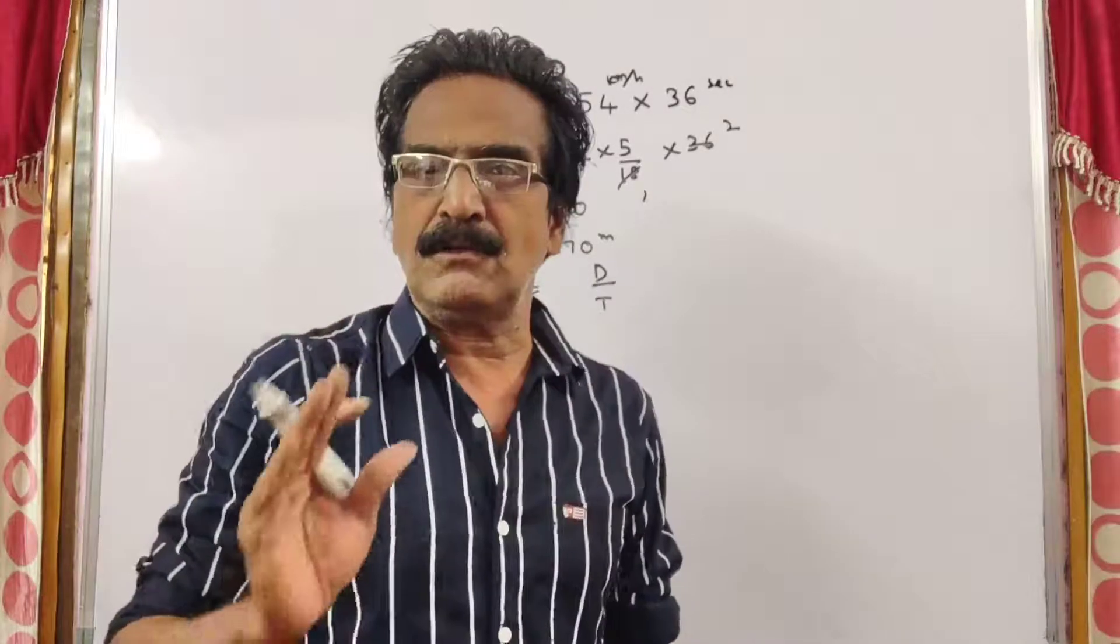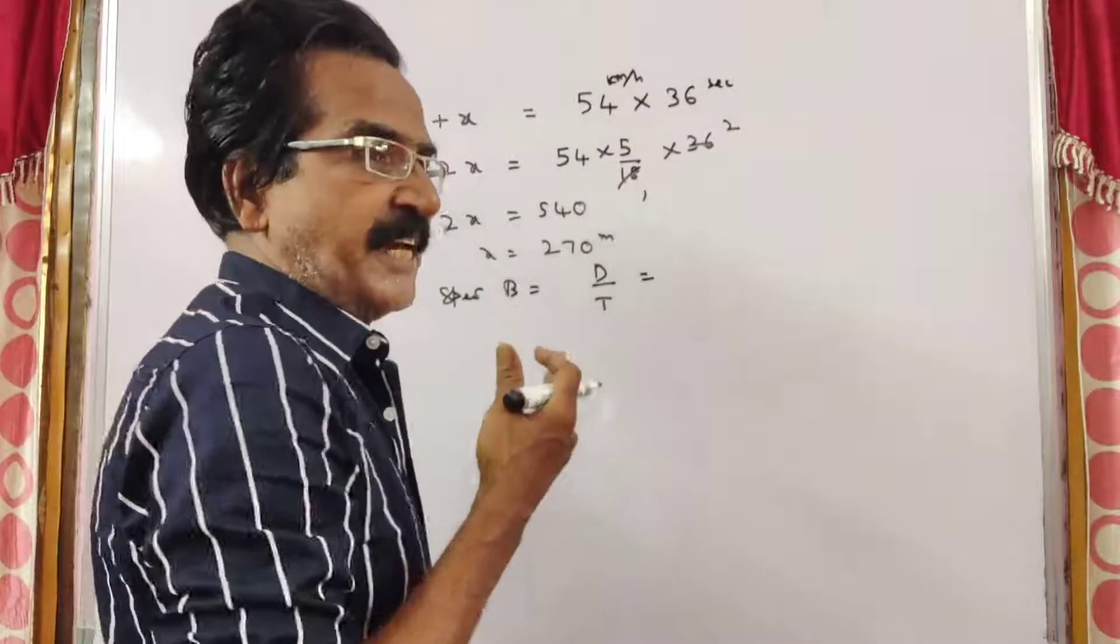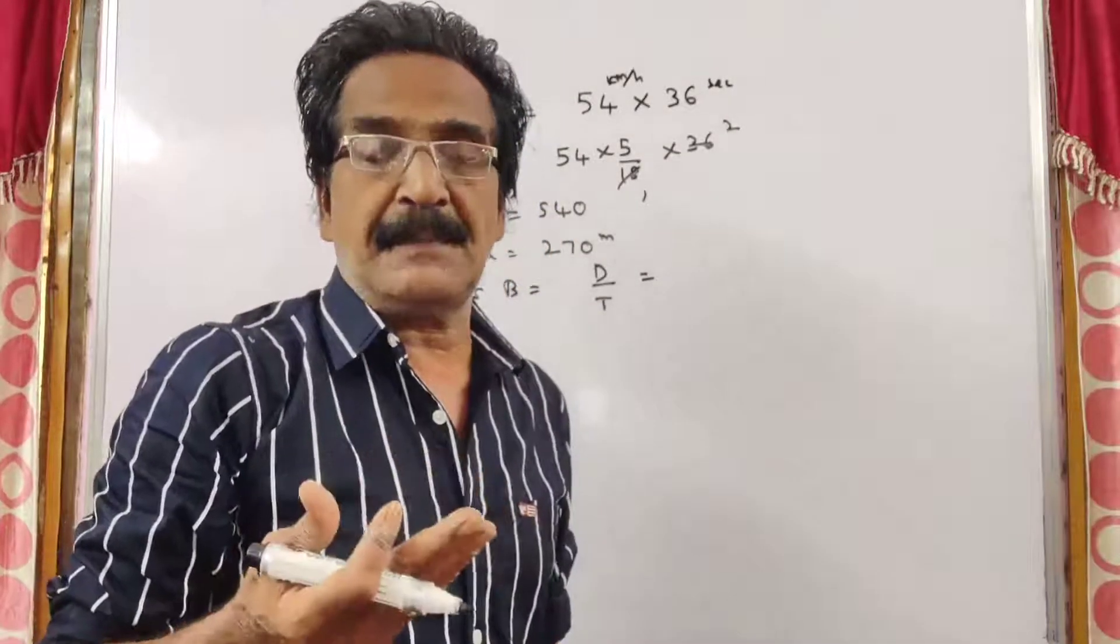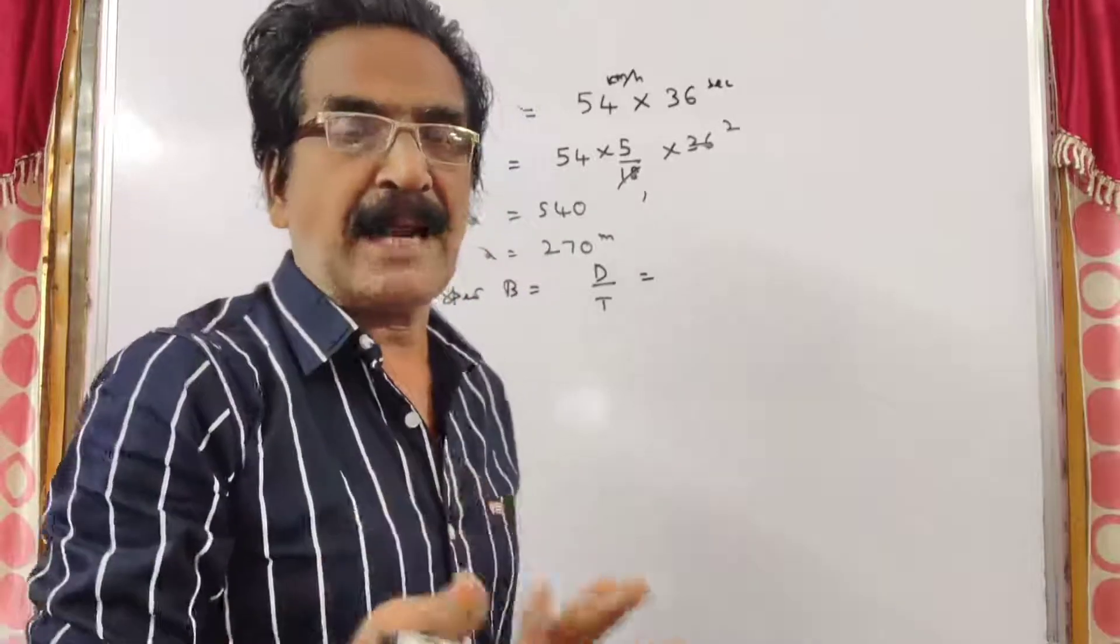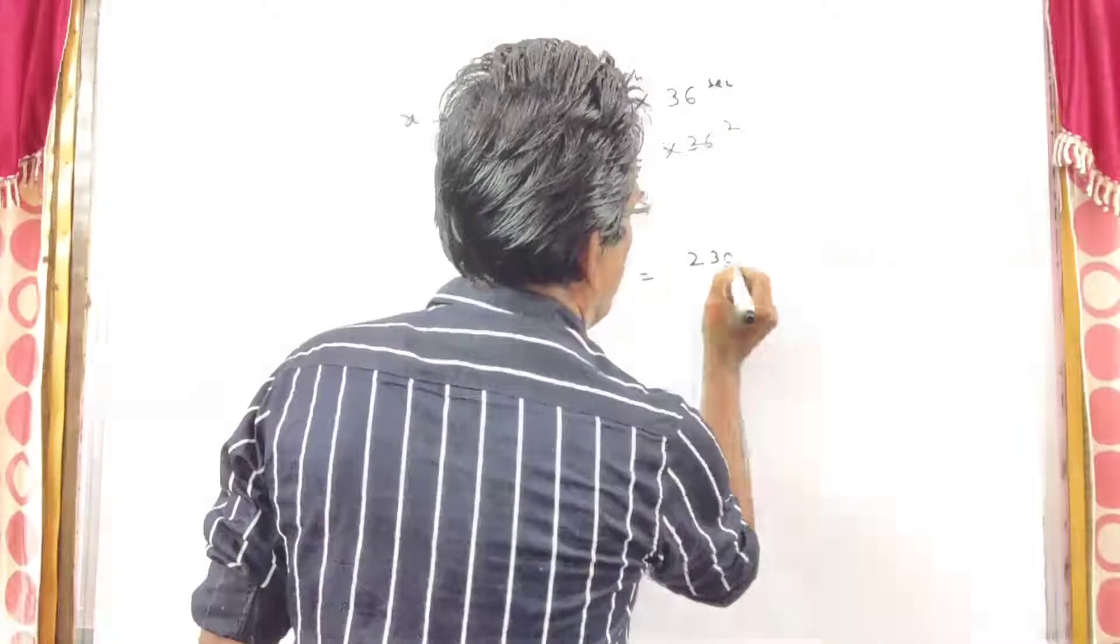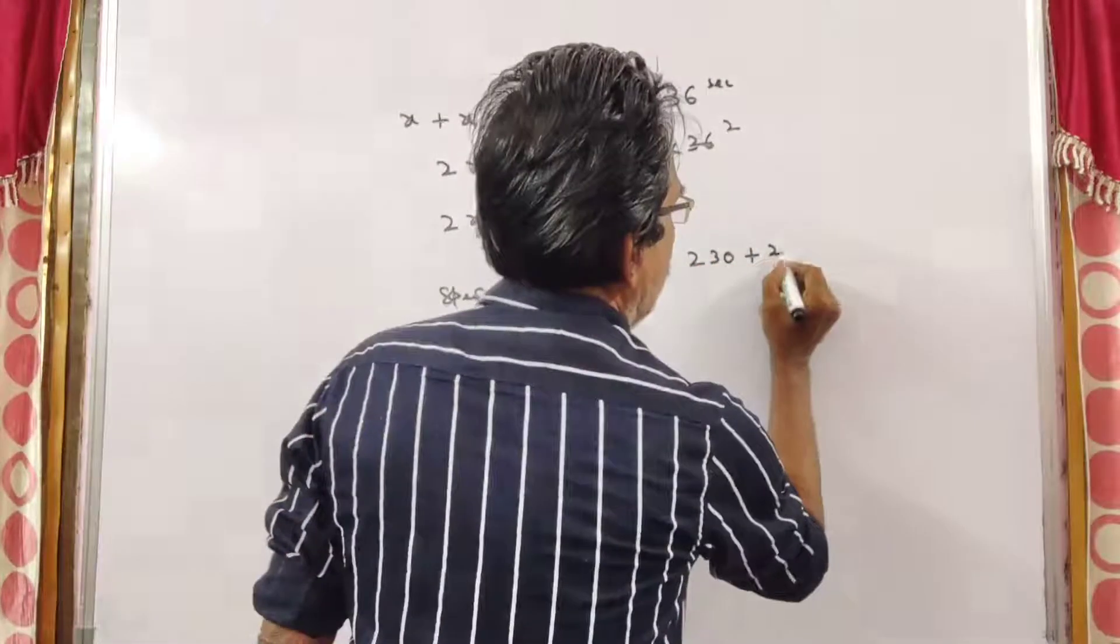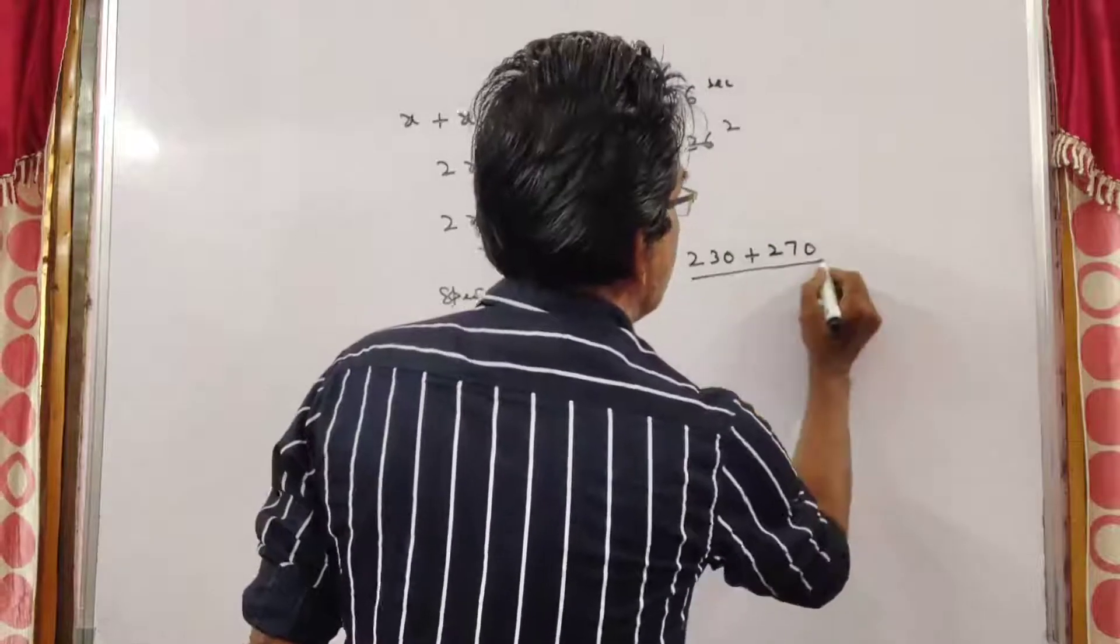Speed is equal to distance by time. What is the distance? This train is 230 meters long. This train is crossing the same platform. So train length 230, platform length 270. This is the distance.